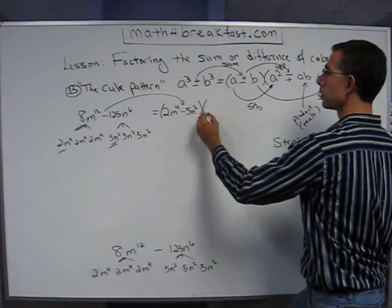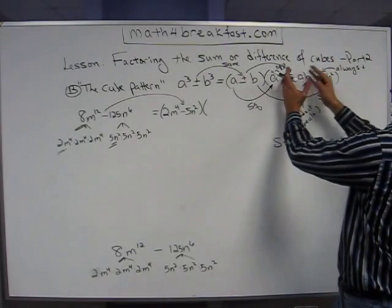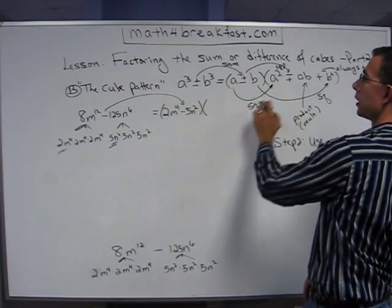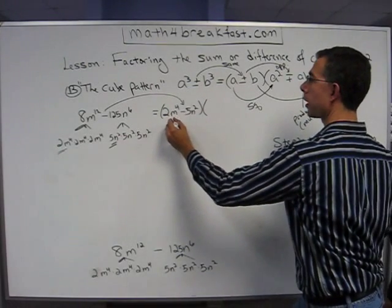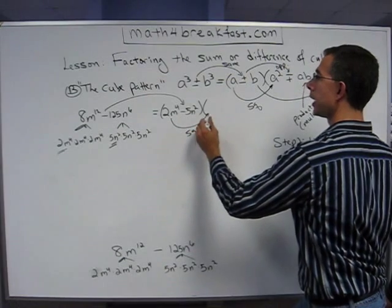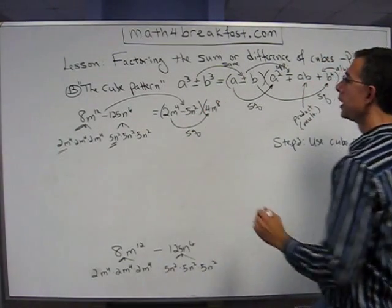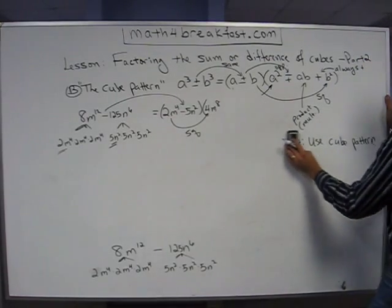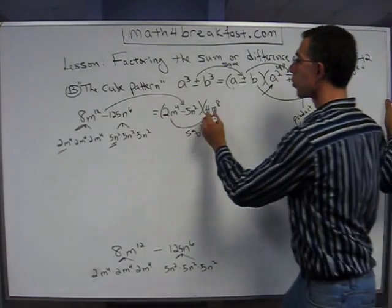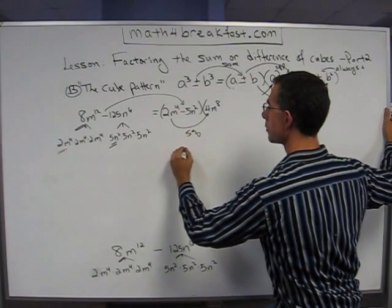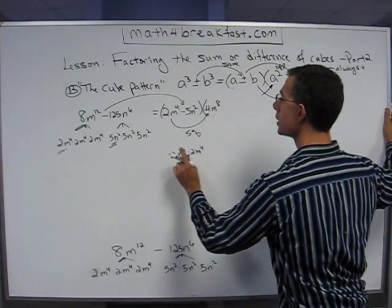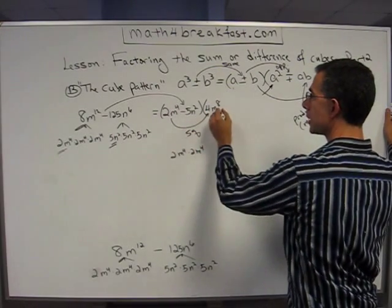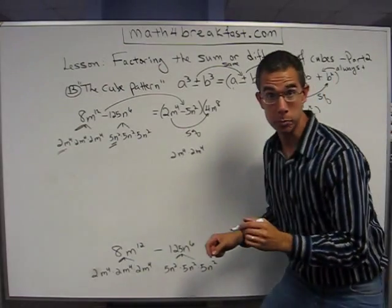Now I need to continue the pattern here. And the pattern says when I want to write up my trinomial, I take the first term, the not cubed term, and I square it. So I take the 2m to the 4th and I square it. So I'm going to put over here squared, and now I get 4m to the 8th. Squaring it, what does that mean? Well, 2m to the 4th times 2m to the 4th. Something times itself. That's what squaring means. And that's how I got 4. 2 times 2 is 4. And the m to the 8th was m to the 4th times m to the 4th. Add up the exponents.